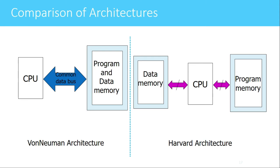This is the representation of the architectures. In Von Neumann architecture, the same common data bus is used for accessing instructions as well as data from memory. In Harvard architecture, there is a separate bus for accessing data memory and a separate bus for accessing program memory, giving a clear distinction between instructions and data. The advantage is that data memory and program memory can each have a different bit width.